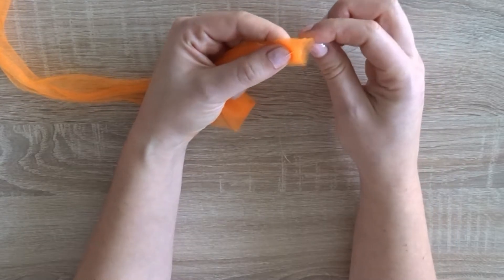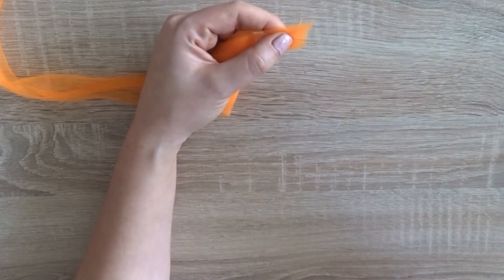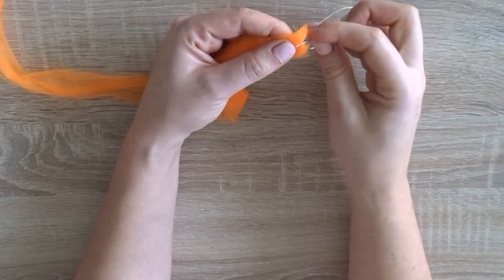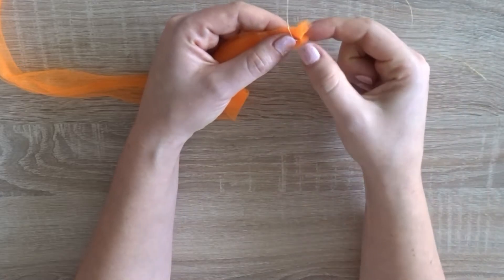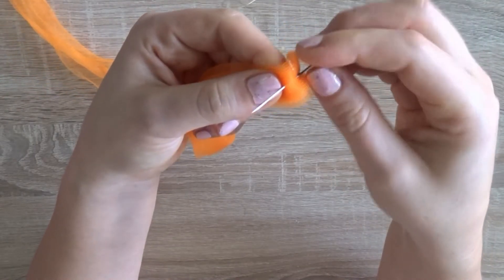You go over the same area twice and the second time pull the thread. It will pull the material together and stay that way too. If you only do it once it will not hold, so make sure you do it twice.